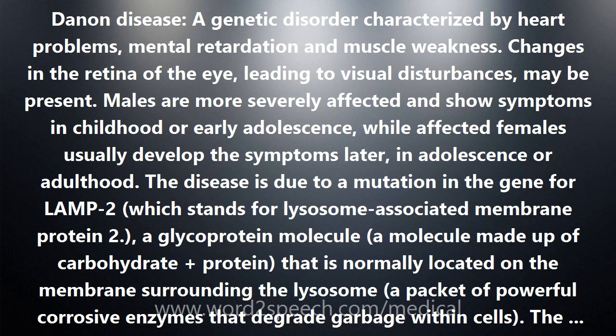The gene for LAMP2 is on the X chromosome and is inherited in a pattern known as X-linked dominant. A person with one copy of the defective X chromosome will develop the disease, in contrast to an X-linked recessive condition, in which two copies of the defective X chromosome are necessary for the condition to develop. This means that mothers with Danone Disease will typically pass on the risk of disease to approximately half of their sons and daughters, while affected fathers will pass the defective gene to all of their daughters but none of their sons.